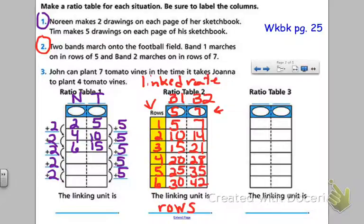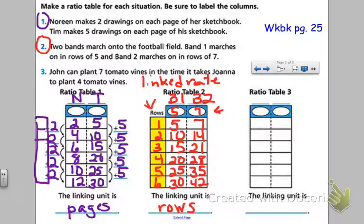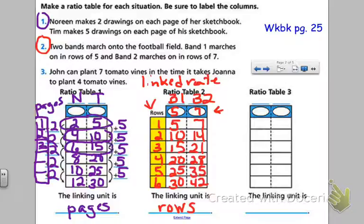For Noreen, each page is going to increase by two drawings, and for Tim they're going to increase by five drawings. So we have twenty, twenty-five, and thirty. The linking unit here would be pages — if I were to have an extra column, it would probably be labeled pages. Because on the first page, Tim and Noreen have two and five; by the second page, Noreen would have four and Tim ten; by the third page, Noreen would have six and Tim fifteen, and so on. The basic ratio is two to five: for every two drawings that Noreen does, Tim has five.